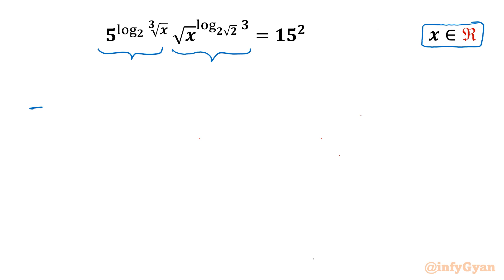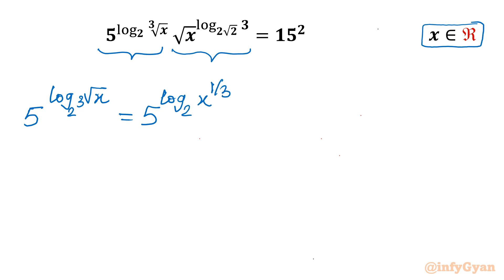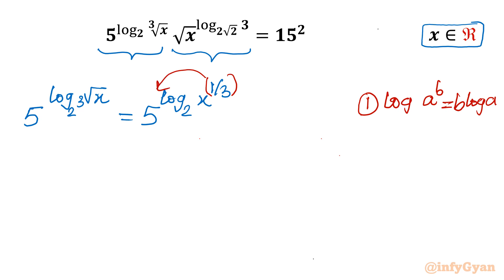Let me simplify both LHS terms one by one. For the first term, 5^(log base 2 of ∛x), I can write this as 5^(log base 2 of x^(1/3)). Using the log property log(a^b) = b·log(a), this power comes out as a multiplier, giving us 5^((1/3)·log x base 2).